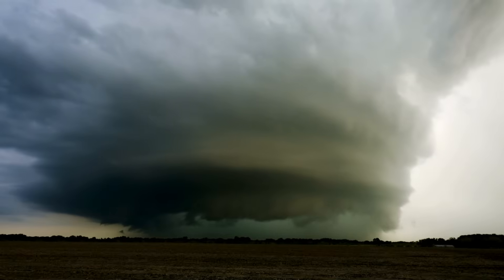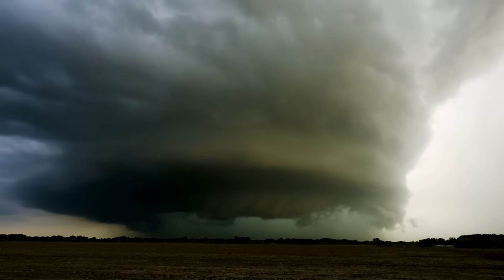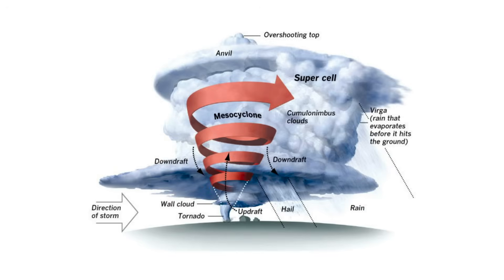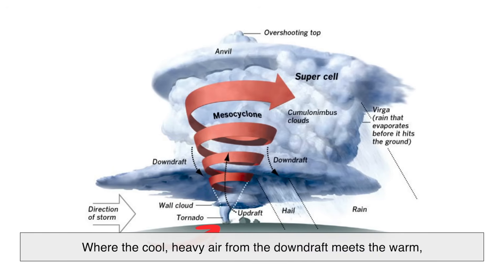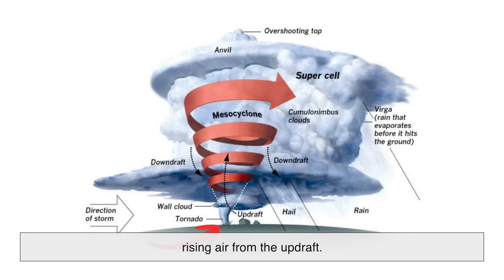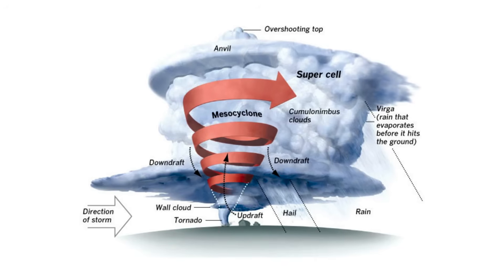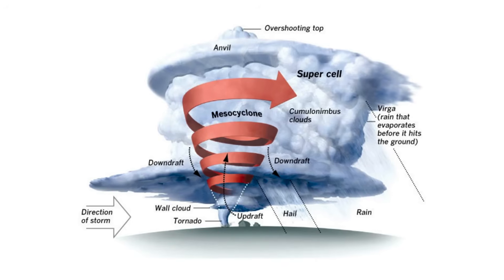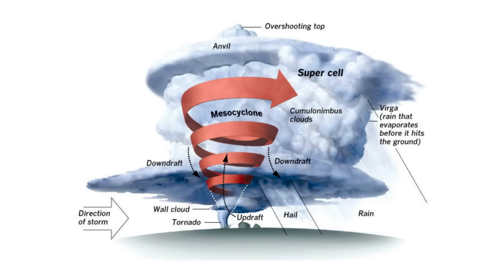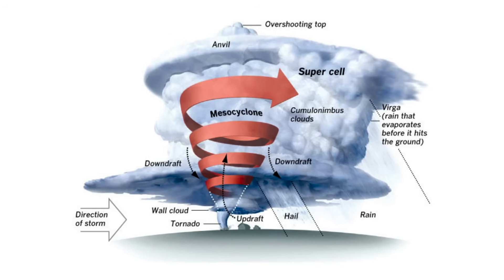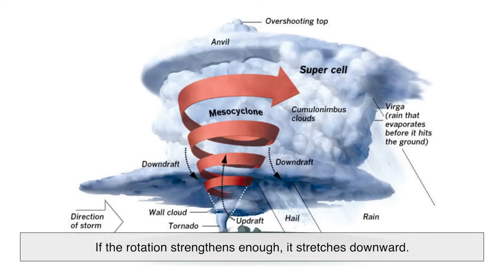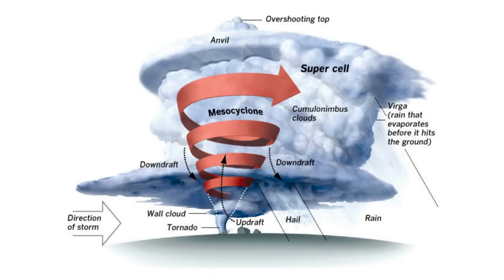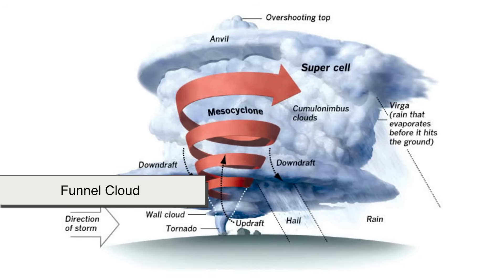So when does this swirling giant become a tornado? The transformation happens near the base of the cloud, where the cool, heavy air from the downdraft meets the warm, rising air from the updraft. This interaction creates an area of intense rotation just above the ground. If the rotation strengthens enough, it stretches downward, forming what we know as a funnel cloud.